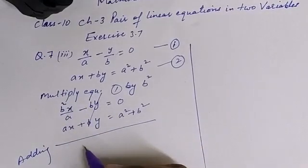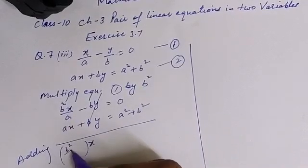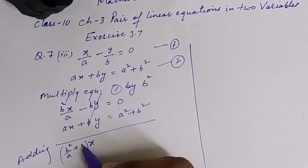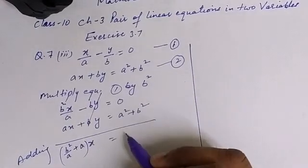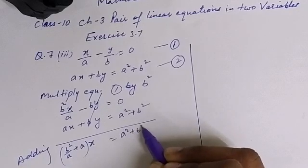So here if I take x common, it becomes here b square over a, here plus a will be left, and in this side 0 plus a square plus b square is a square plus b square only.